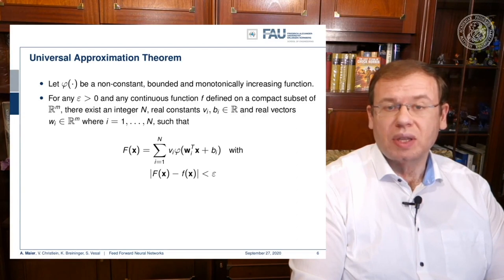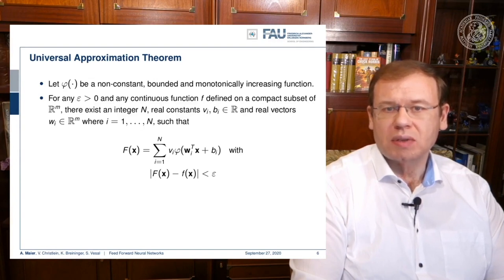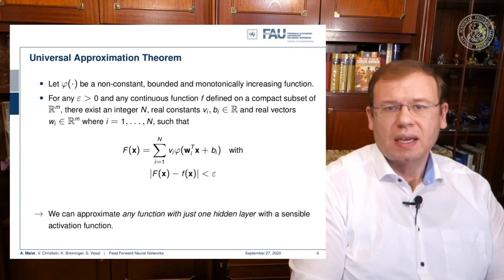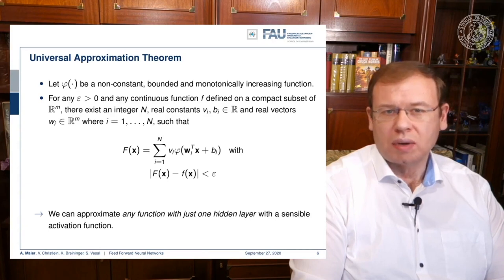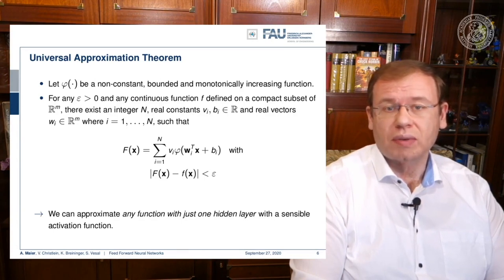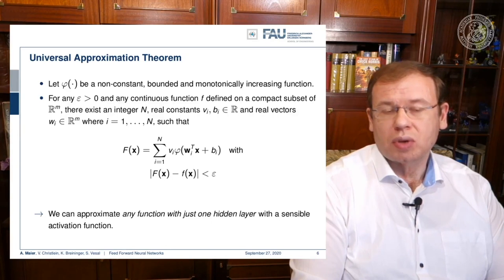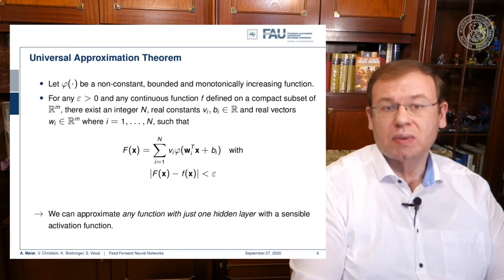If you define it this way, you can demonstrate that if you subtract capital F of x from the true function f of x, the absolute difference between the two is bounded by a constant epsilon, and epsilon is greater than zero. The universal approximation theorem also tells us that if we increase n, the epsilon goes down. So the more neurons we take in this hidden layer, the better our approximation will get.